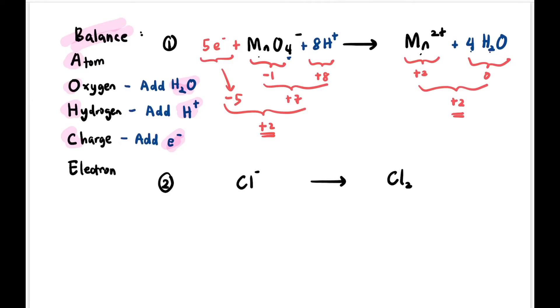So next part, we look at the second equation. We have Cl⁻ becomes Cl₂. So we try to balance atoms first. Cl and Cl₂ only. So we need 2 on the left side. So we balanced the atoms. So we look - oxygen is not there, hydrogen is not there, so don't create problems. No need to add H₂O, no need to add H⁺. Directly check charge.